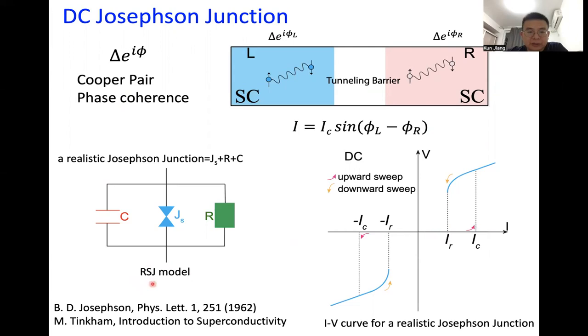After this energy is dissipated and the current drops to the return current IR, the system goes back to the superconducting state. This is normally described by the RSJ model. If you are interested, please refer to Dean Hampel's book, Introduction to Superconductivity.